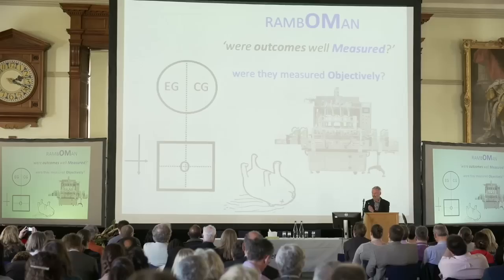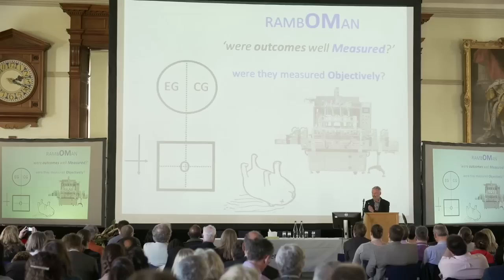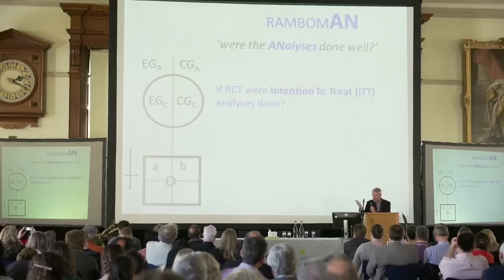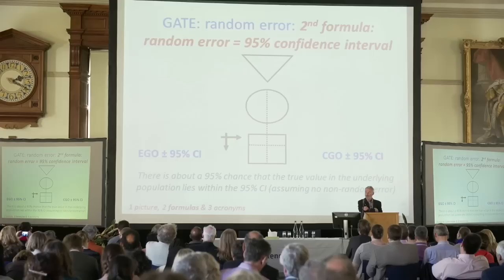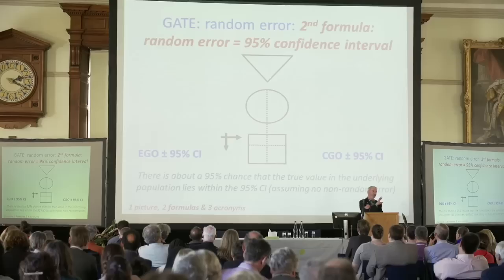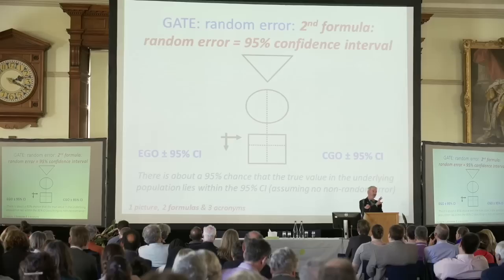Measuring outcomes — ideally they're done blindly or objectively. And then there's the analysis: were the analyses done properly? Did you do ITT — intention to treat analysis? Did you adjust for confounding? These are just the beginnings of conversations. RAMBO MAN is designed to identify the key causes of systematic error in epidemiological studies.